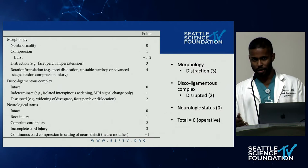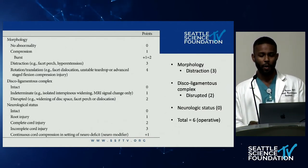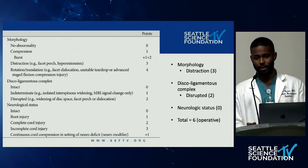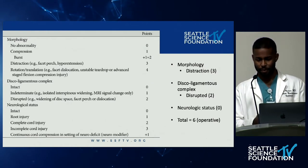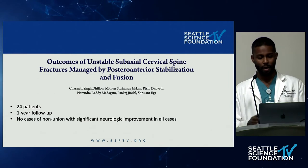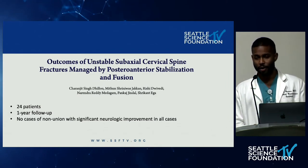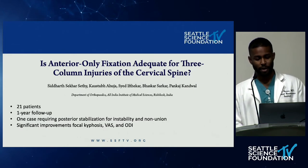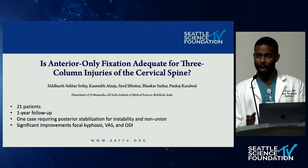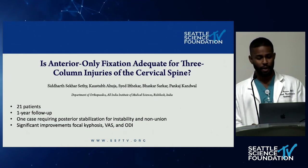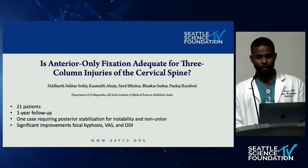When assessing these patients, the next point is determining approach: anterior, posterior, or combined. The jury's still out in terms of the evidence in the literature. A study in the Asian Spine Journal had 24 patients managed with front-back procedures, all with one-year follow-up, no cases of non-union, and all patients had significant neurologic improvement. Another series of 21 patients, also from the Asian Spine Journal, with one-year follow-up of an anterior-only approach, had one case requiring posterior stabilization for instability and non-union, but otherwise significant improvements in focal kyphosis, VAS score, and ODI.